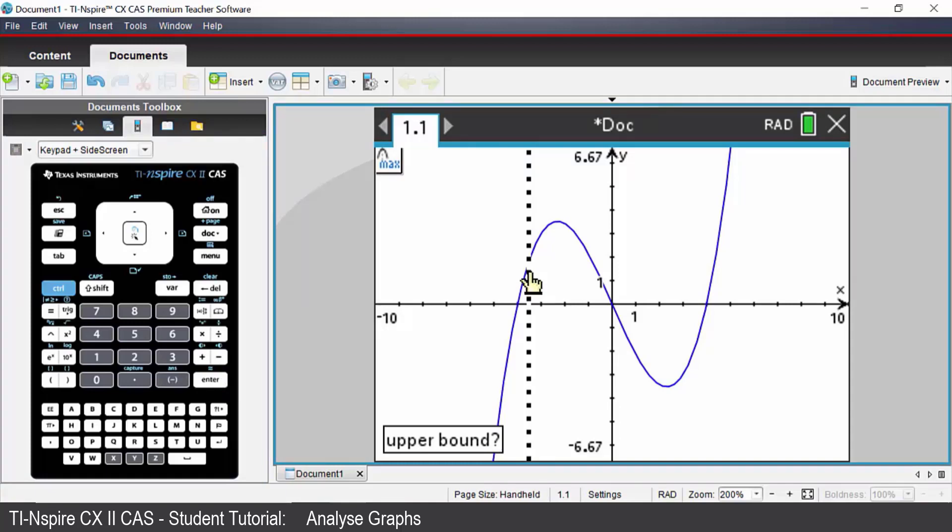As I move my cursor you will see the maximum value start to increase. As I reach my local maximum you will see that value stop. Click or press enter and it will paste that maximum value onto your graph for you. Likewise we could also find the local minimum turning point using the minimum function. I'm going to click on that point there and remove it.